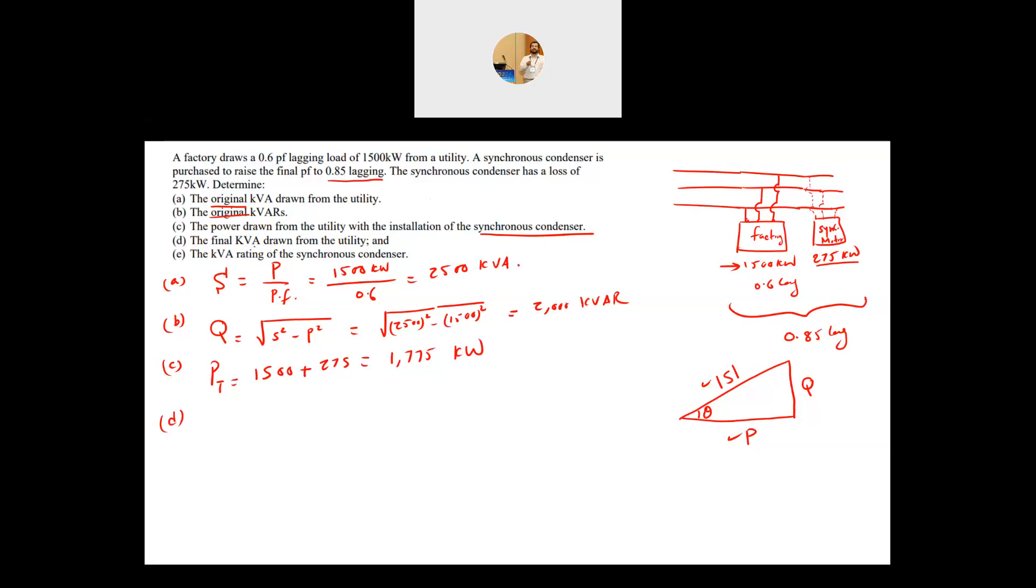Part D, the final kVA drawn from the utility. So I know the total P, I know the total power factor. So your S total after adding the synchronous condenser is equal to the total power 1775 kilowatt divided by 0.85, the new power factor, which is 2088 kVA.